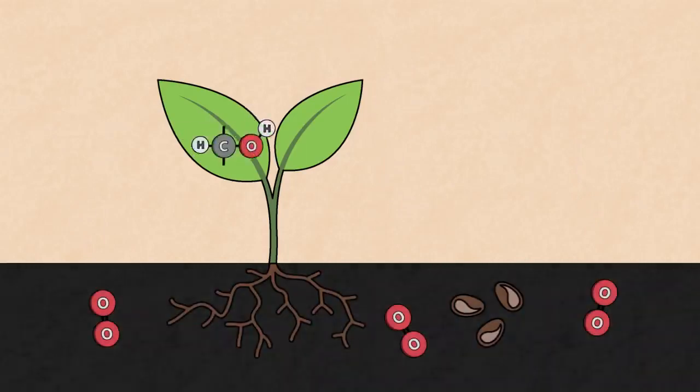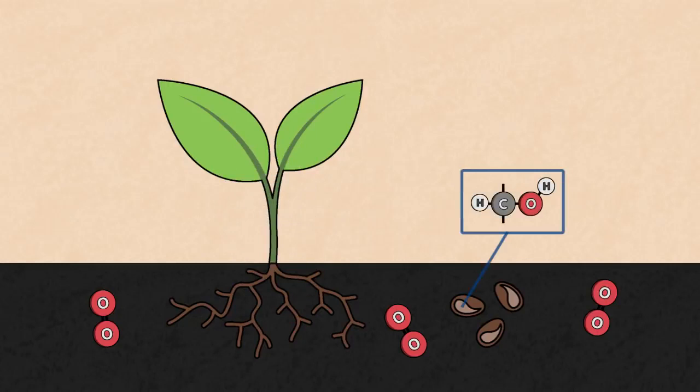The roots get sugars sent down from the leaves and seeds have enough of their own fuel supply until they put out green shoots and start making more.